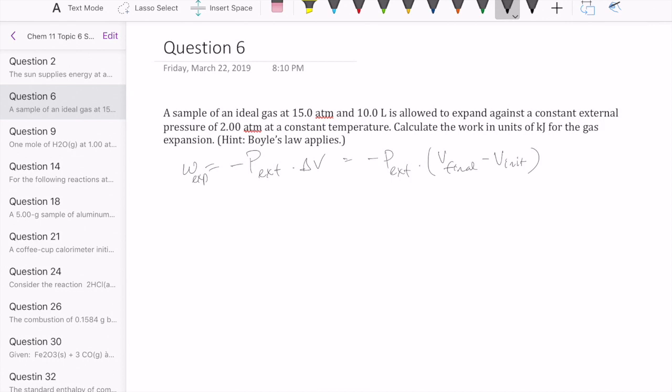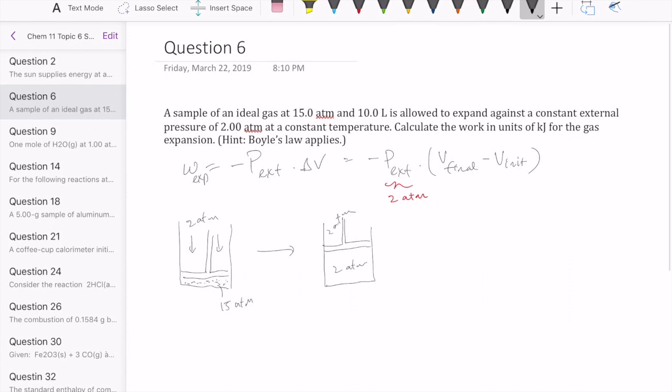Now our P external here is 2 atmospheres. Your gas is initially at a fairly high pressure of 15 atmospheres, so all the gas is packed here. On the outside, the pressure is only 2 atmospheres. Because there's this pressure differential, the gas is going to push up until the inside and outside pressures are equal to each other, where you have 2 and then 2 on the outside. As a result of this expansion,